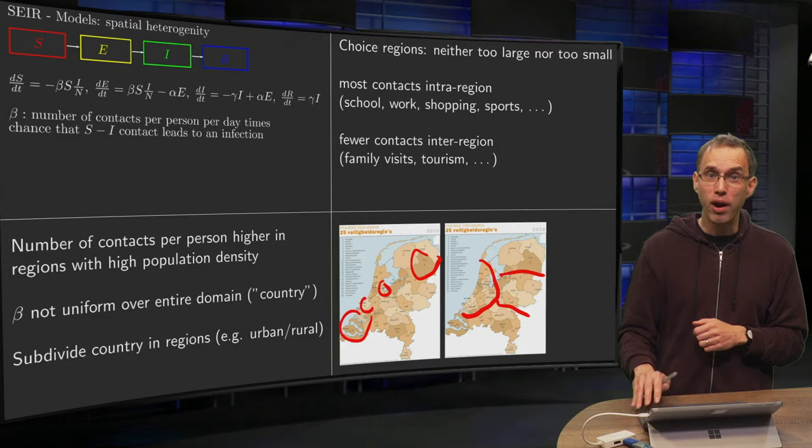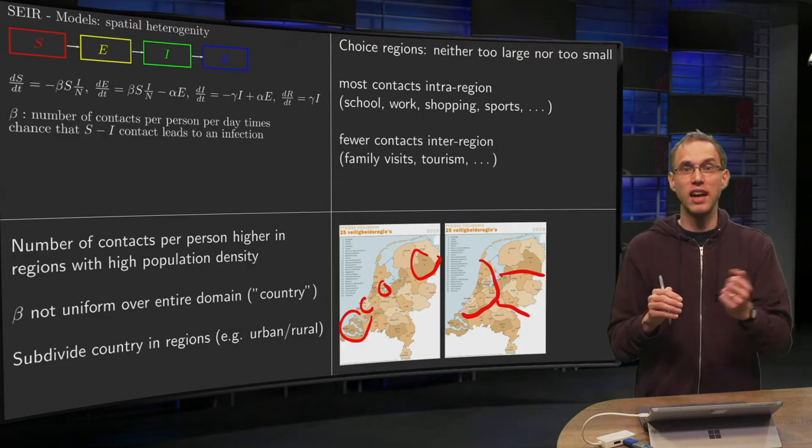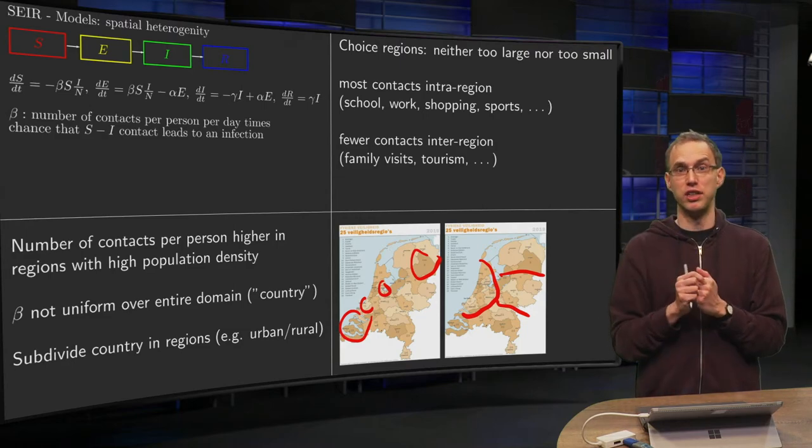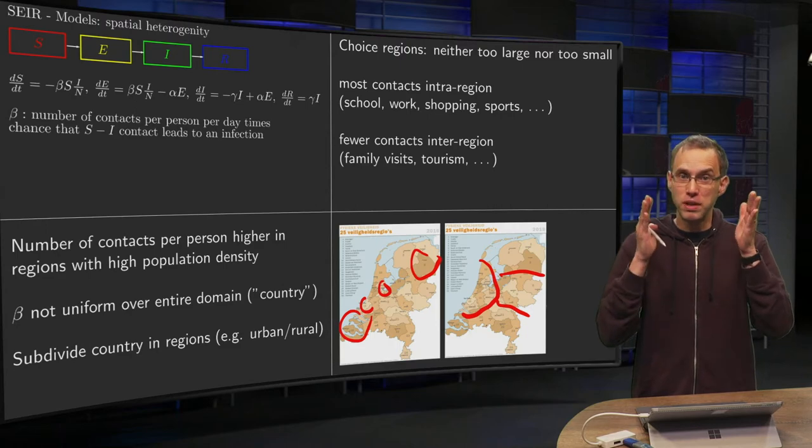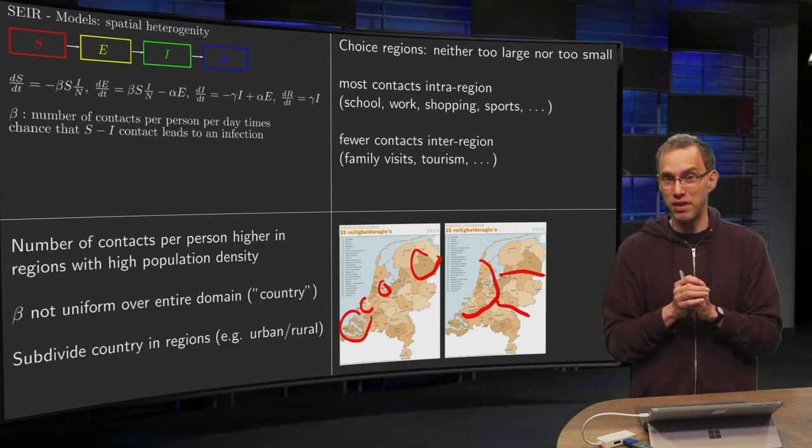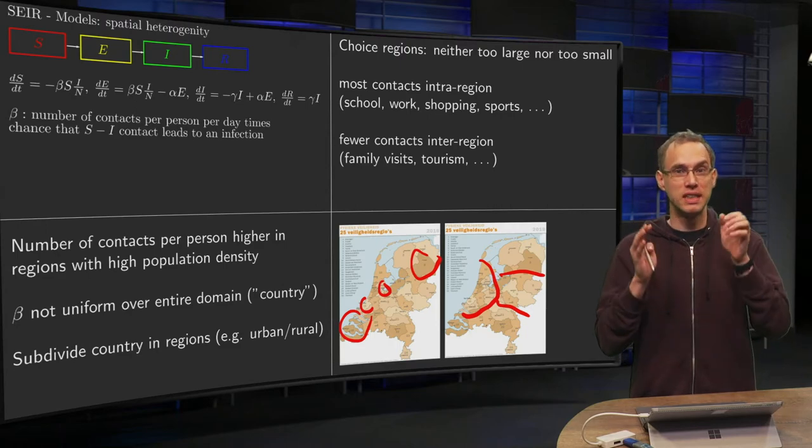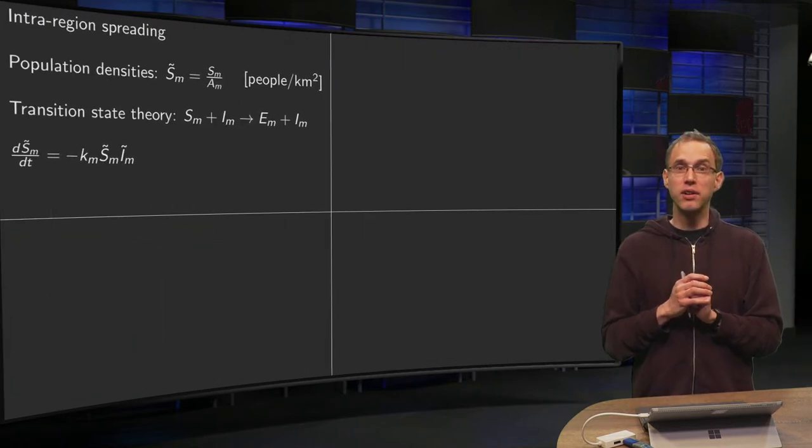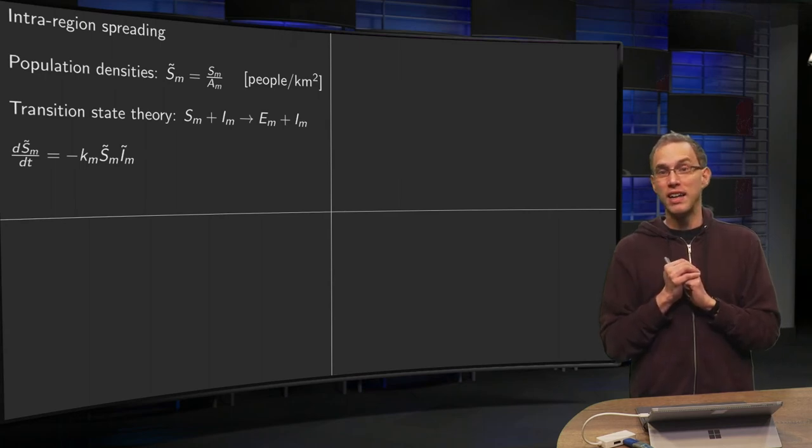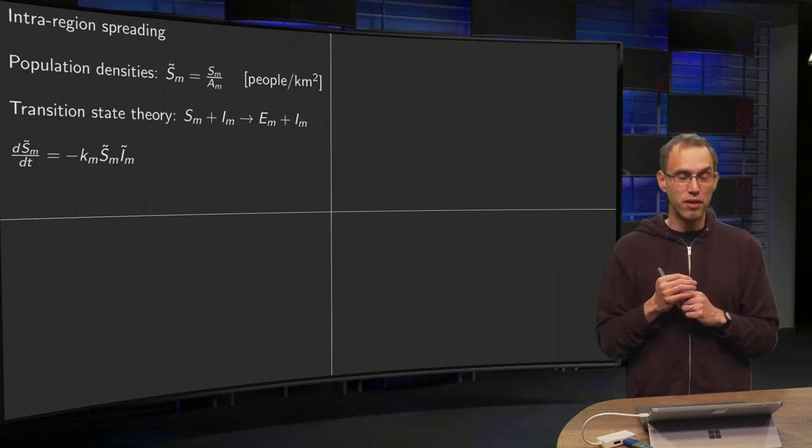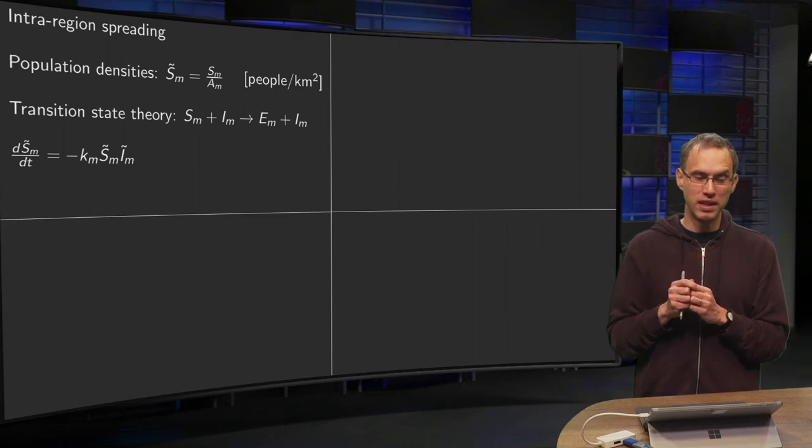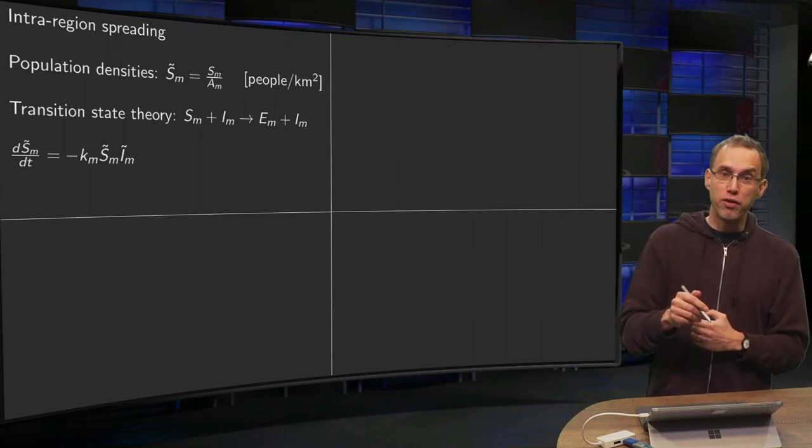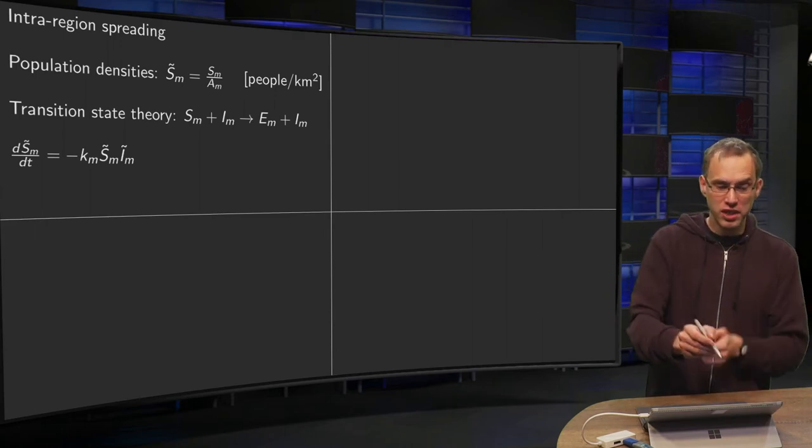Then, how are we going to model those intra-region contacts and inter-region contacts? Because I said, those betas should be modeled differently. They are fundamentally different. You cannot take them the same. I will borrow some idea here from chemistry for the intra-region spreading.